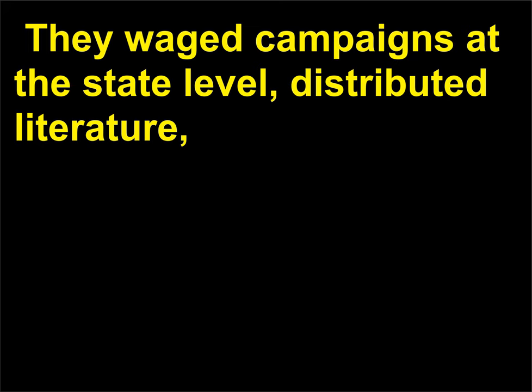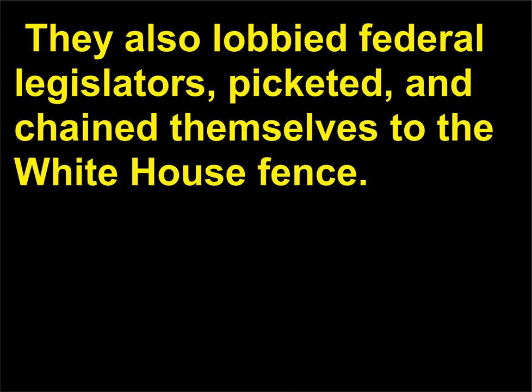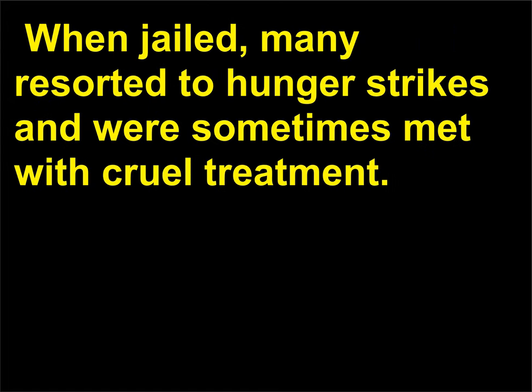The suffragists appealed to middle-class and working-class women, as well as to students and radicals. They waged campaigns at the state level, distributed literature, organized meetings, made speeches, and marched in parades. They also lobbied federal legislators, picketed, and chained themselves to the White House fence. When jailed, many resorted to hunger strikes and were sometimes met with cruel treatment.